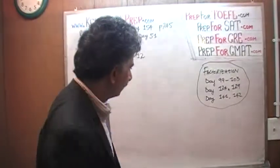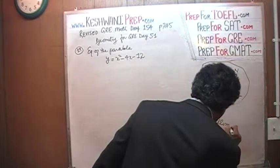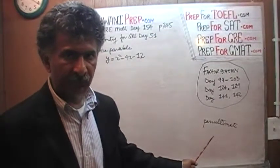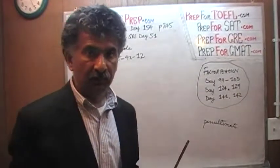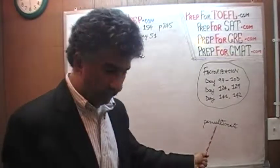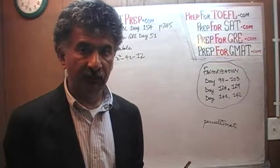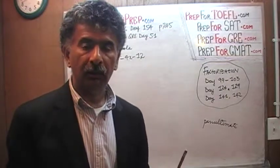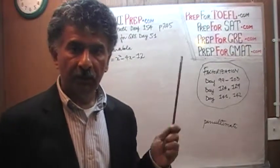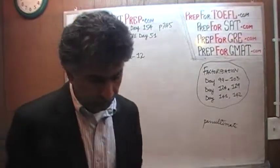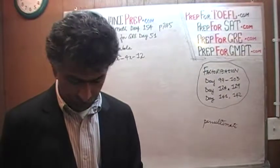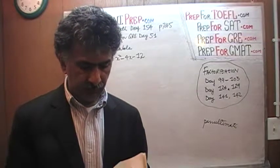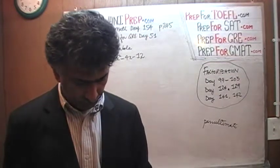Question 19 is the penultimate question — the second to the last question. Penultimate is spelled P-E-N and then ultimate, but it is not pronounced penultimate; it is pronounced penultimate, which just means second to the last. If you want to learn this word properly along with other useful words for the GRE, you must have a decent vocabulary if you have any hope of getting a decent score in the verbal part of the GRE.